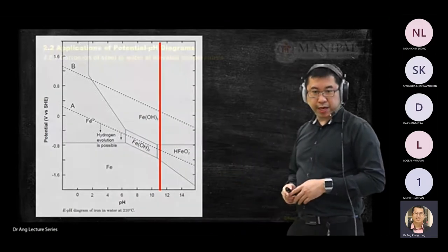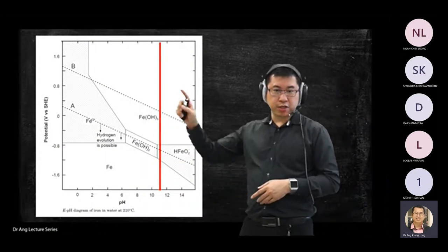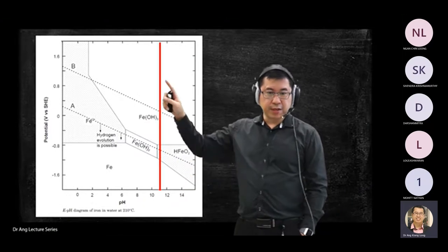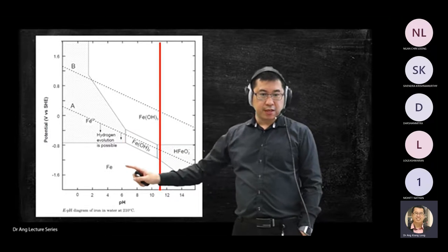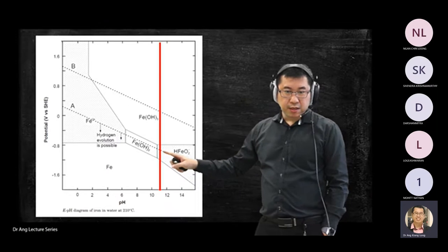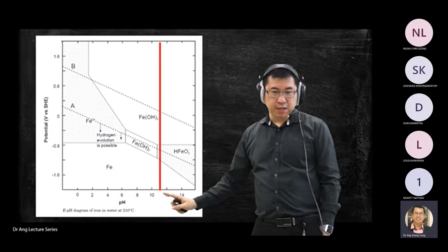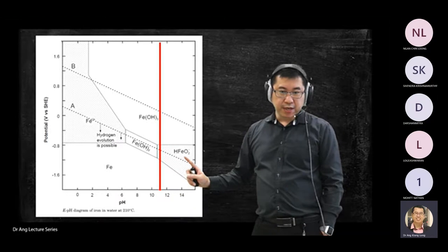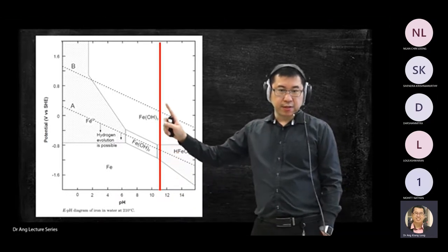Along this pH line, you have a few phases of material depending on the potential value. Below a certain potential you see metallic iron (Fe). At pH about 11 at 210°C, you are in the ferric oxide region. So the phase present depends on both pH and potential.